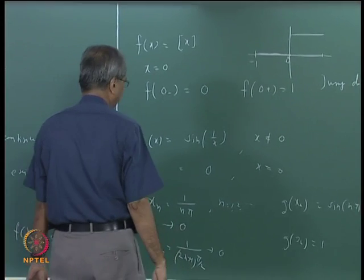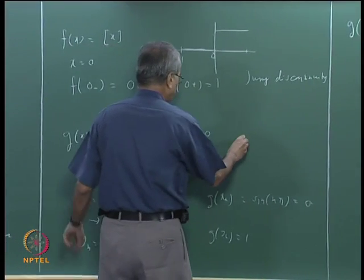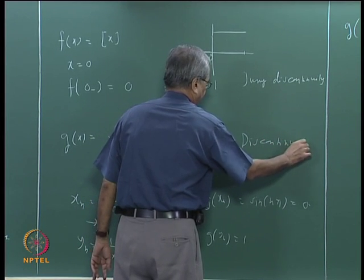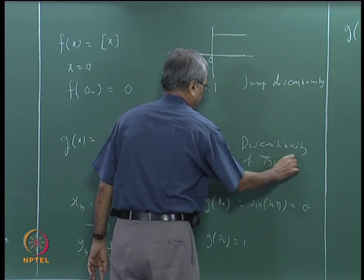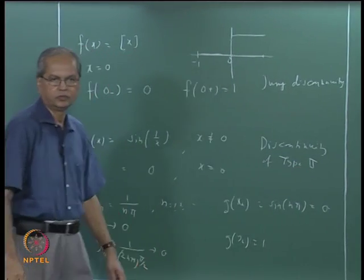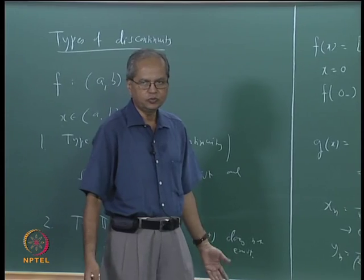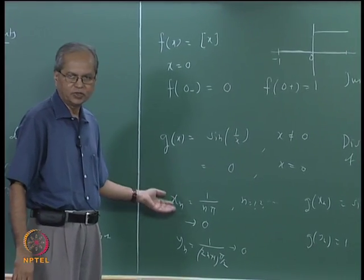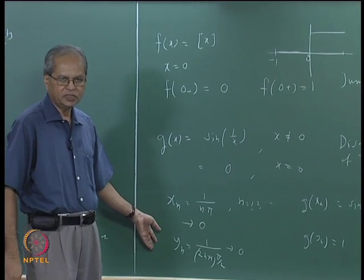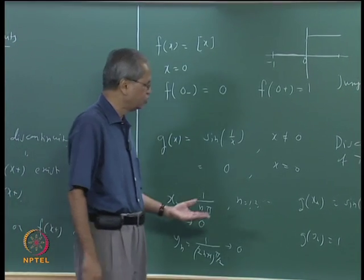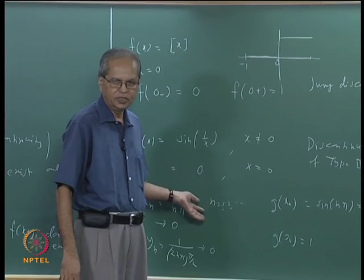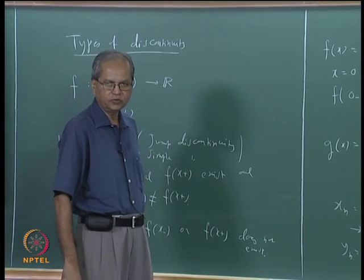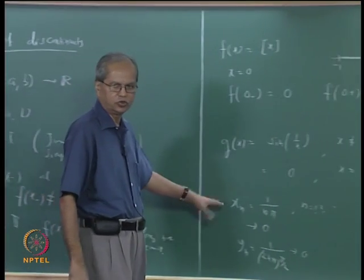This shows that g(0⁺) does not exist, so x = 0 is a discontinuity of Type 2. We can similarly show g(0⁻) does not exist by constructing analogous sequences approaching from the left, but showing one limit fails is sufficient to establish Type 2 discontinuity.